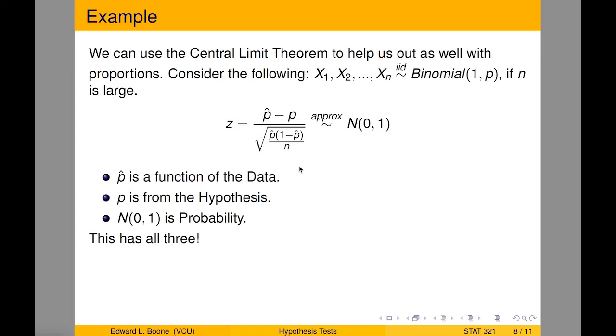Here, p hat is a function of the data. It's the number of successes over the number of people we asked. p is from the hypothesis. Often we'll have a zero on it. And normal zero, one is at least approximately the probability distribution when n is large.